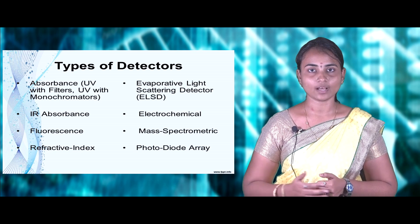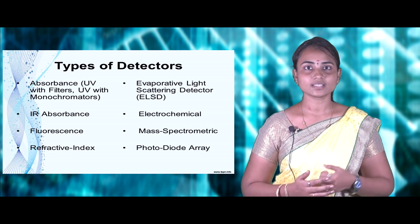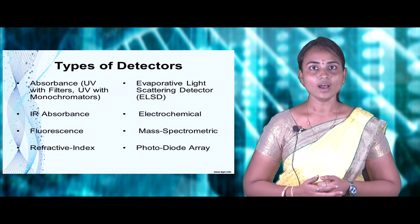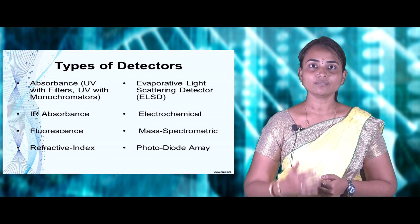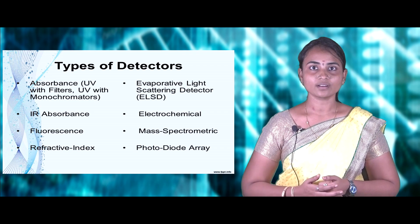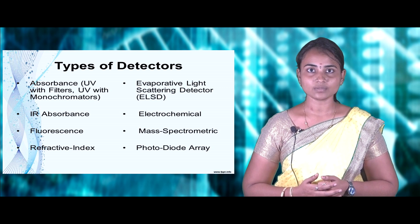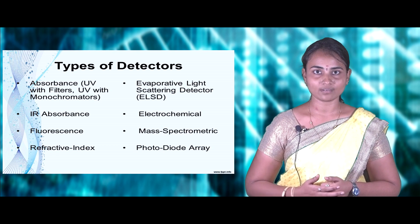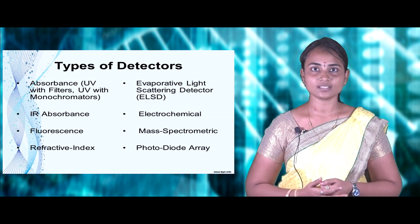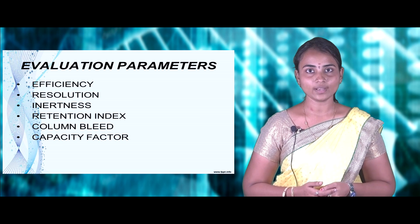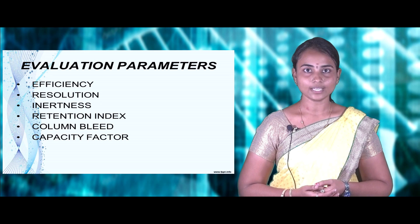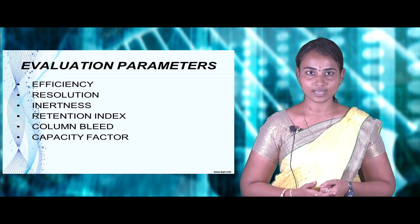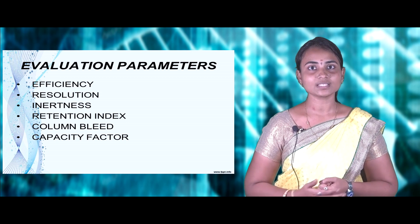For detecting the different natures of samples separated, various types of detectors can be used. These include UV absorbance with filters or monochromators, IR absorbance, fluorescent detectors for fluorescent materials, refractive index detectors, evaporative light scattering detectors, electrochemical detectors, mass spectrometric detectors, and photodiode arrays. After obtaining the chromatogram from the detectors, the compounds are evaluated based on parameters including efficiency, resolution, inertness, retention index, column bleed, and capacity factor.